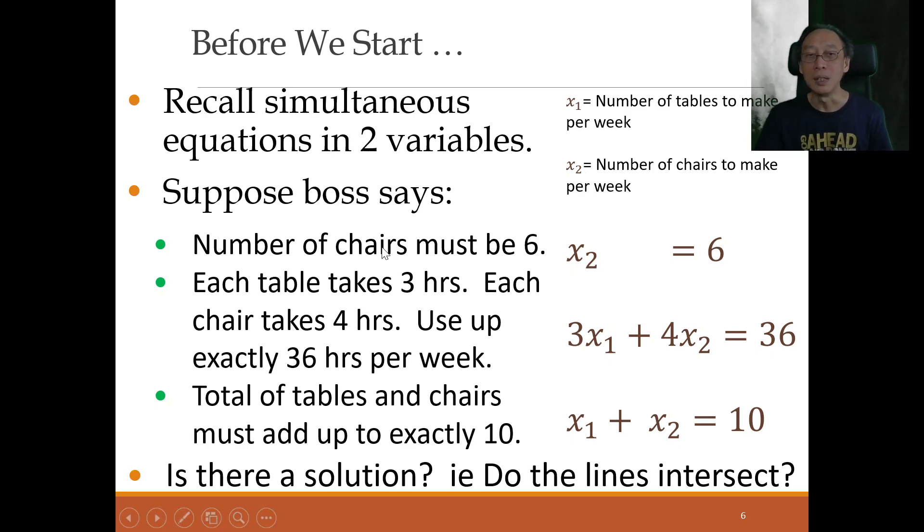So suppose the boss says number of chairs must be six. So I must have six chairs because of my van, I can squeeze in six and anything less than six, it's inefficient. Anything more than six, I must rent another van, not really efficient. So I want exactly six. So we'll write that. So that's one equation, two unknowns. Each table takes three hours. Each chair takes four hours. Use up exactly 36 hours because boss wants to really be efficient and use up all the hours. So that's the requirement. And so what you can write is no longer less than equal to, but exactly equal to. Now you can recall that two equations, two unknowns, we can solve it just nicely.